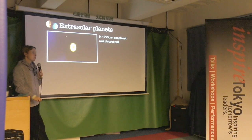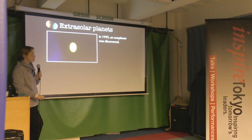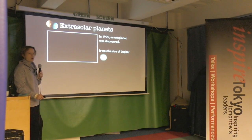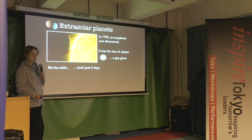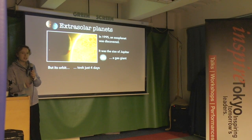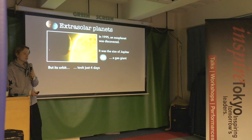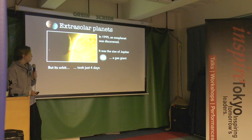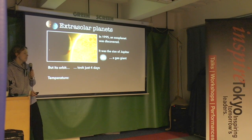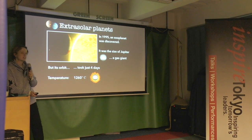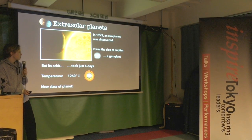In 1995, an exoplanet was discovered — not actually the first planet found outside our solar system, but the first one orbiting a star similar to our Sun. It was the same size as Jupiter, which seemed quite reasonable. But its orbit — its whole year — took just four days. Mercury, our closest planet to the Sun, takes 88 days; Earth takes 365. This planet's closeness gave it a temperature of 1,260°C. As a result, this new class of planets was called the hot Jupiters.